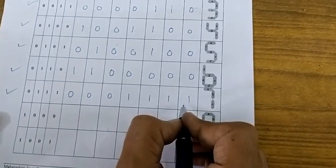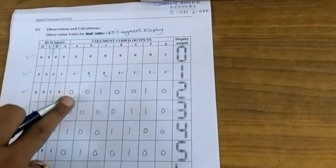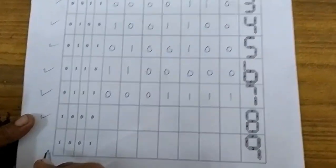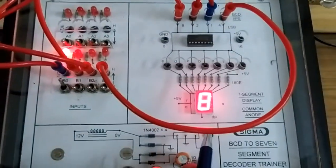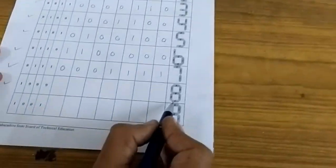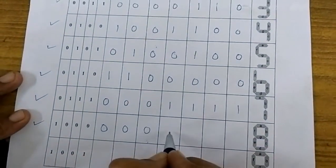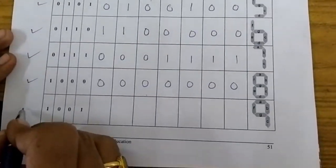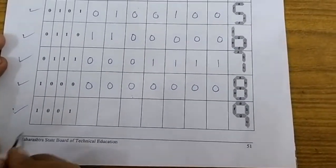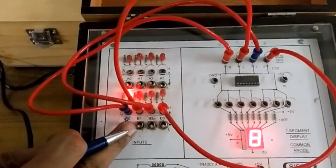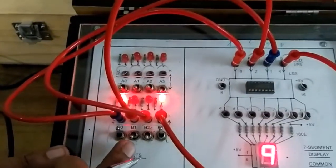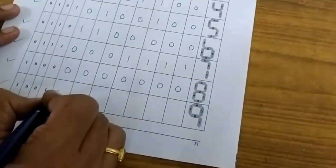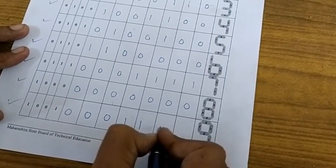The voltage levels for digit 0 have already been verified using the multimeter, and the same can be done for the other digits. The next input is 1 0 0 0, which corresponds to digit 8, where all segments are on, so all output pins A to G are at logic 0. The last valid BCD number is 1 0 0 1, which displays digit 9. For 9, segments A, B, C, F, and G are on, while D and E are off.